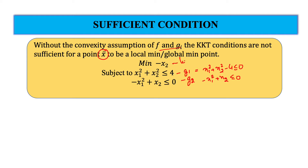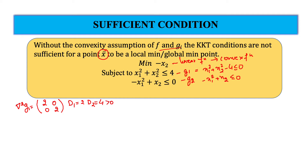Since the objective function is a linear function, it is a convex function. For G1, we find the Hessian matrix, delta squared G1, which is the matrix [2, 0; 0, 2]. The principal minor of order 1 is 2 and the minor of order 2 is 4, so both are greater than 0. Hence this Hessian matrix is positive definite, which means G1 is a convex function.